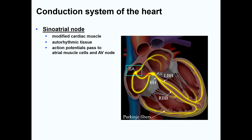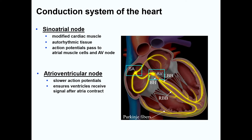The sinoatrial node, or SA node, generates the impulses to cause rhythmic contractions of cardiac muscle. This is an area of modified muscle that is auto-rhythmic. Its action potential is passed to the atrial muscle cells, which function as a syncytium, and then to the internodal pathway, which conducts this impulse from the SA node to the atrioventricular, or AV node. Here, the signal is delayed so that the atria have time to finish contracting before the ventricles start their contraction.